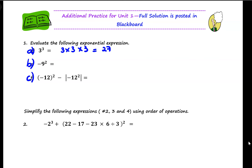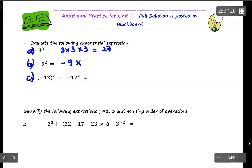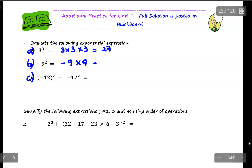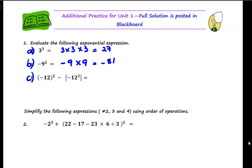For 1B, negative 9 to the exponent 2. Don't forget, the exponent 2 is only for 9, and the negative stays the way it is. So in this case, I should have negative 81. The exponent tells me how many times I multiply the base by itself — keep that in mind.